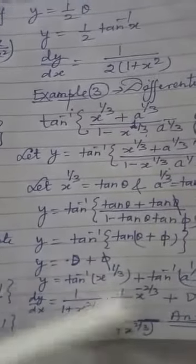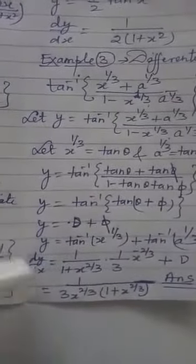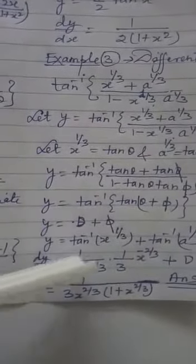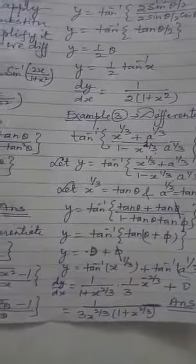The derivative of tan⁻¹(x^(1/3)) with respect to x requires the chain rule: 1/(1 + x^(2/3)) multiplied by (1/3)x^(-2/3). The derivative of tan⁻¹(a^(1/3)) with respect to x is 0, since it contains no x. Therefore dy/dx = 1/(3x^(2/3)(1 + x^(2/3))). That is the final answer. Similarly, you can solve other questions.